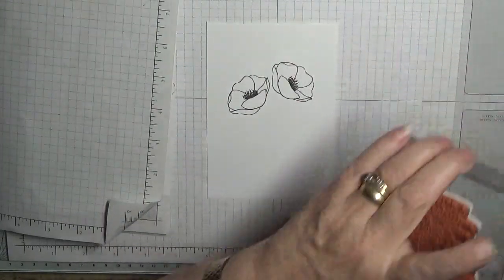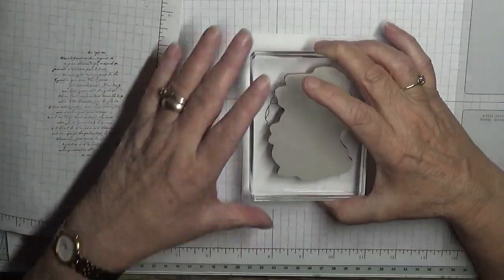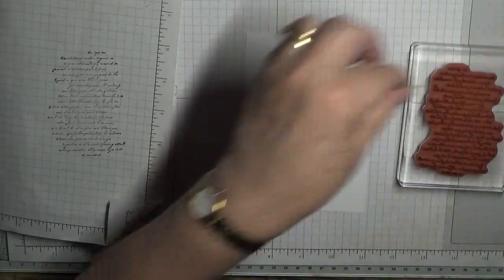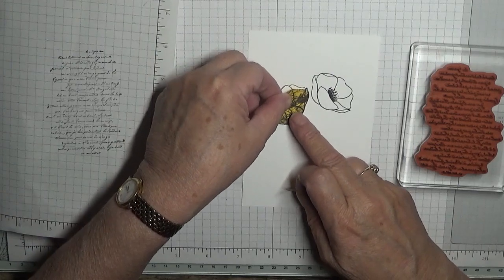Which is that way. Right, first of all we're going to stamp off, and then we're going to, ooh, forgot, we need to mask the poppies.